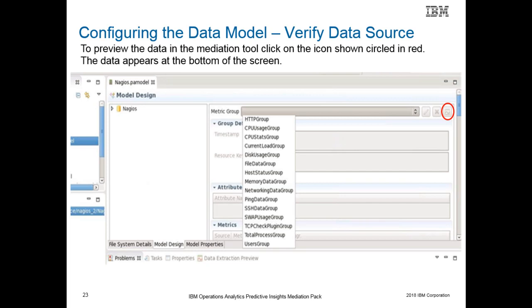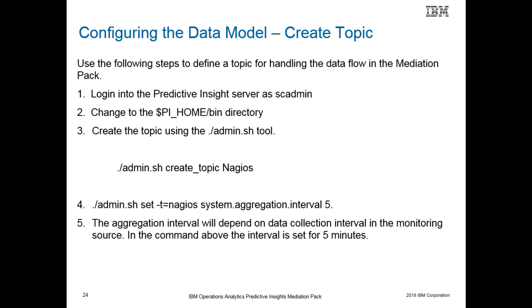After the data source has been configured, you must verify that the Nagios metric groups are appearing. To do this, select any metric group and click on the red circled icon shown in the slide. The last step in configuring the data model is to create the topic. To create the topic, log in to the Predictive Insights server, change to the $PI_HOME bin directory, and then run the commands shown in steps 3 and 4 in the slide. Note that the aggregation interval is set to the same interval that the collection interval was set to when the Nagios XI utility was scheduled by the cron job.